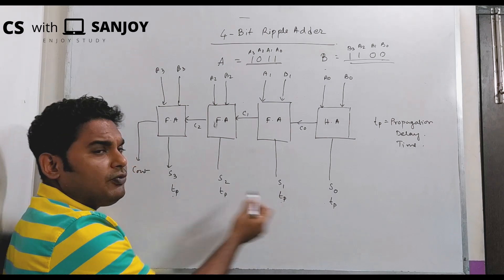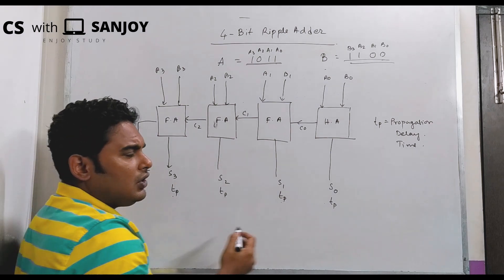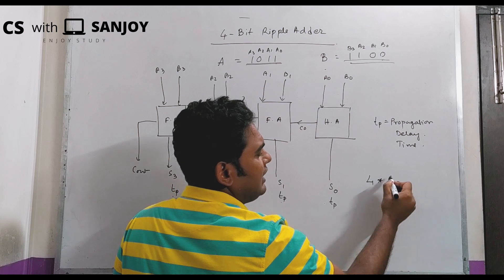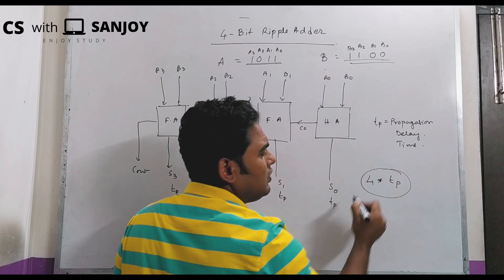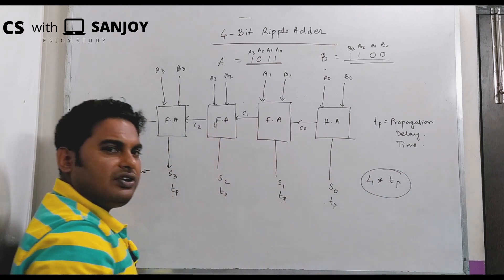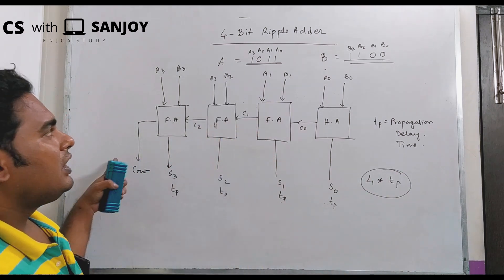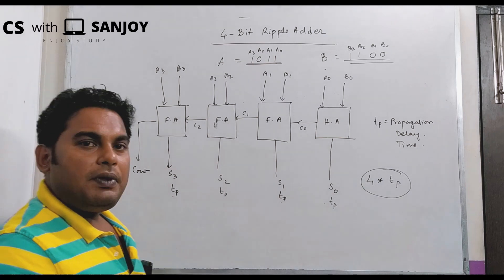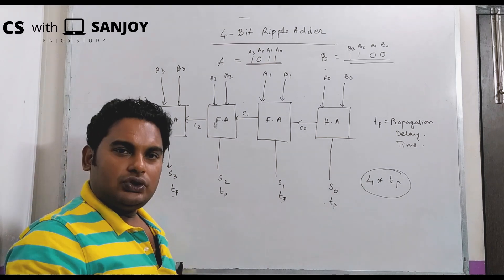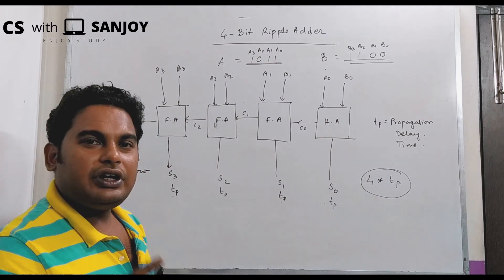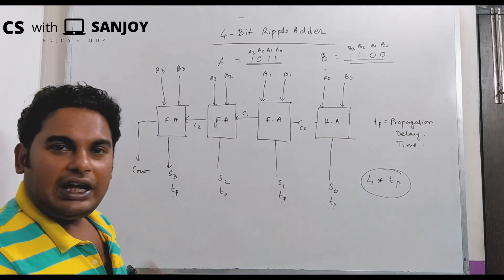That is for 4 bits, we need 4 into tp. So finally, when you generate results for 4-bit, the average time is 4 into tp time.